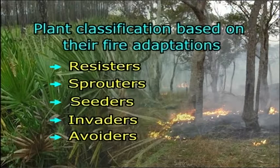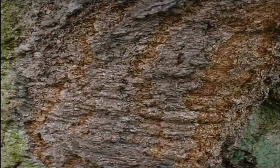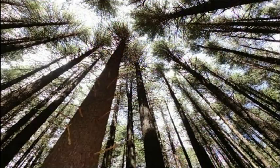We can classify plant species into five different categories based on their fire adaptations. Resistors are species that can survive moderate to low intensity fires with little to no damage. Some adaptations of resistors include thick bark to shield them from fire, deep roots protected from fire, shedding of lower branches to prevent fire from climbing, and moist short needles or leaves that are hard to burn. Examples include sugar pine and Douglas fir.